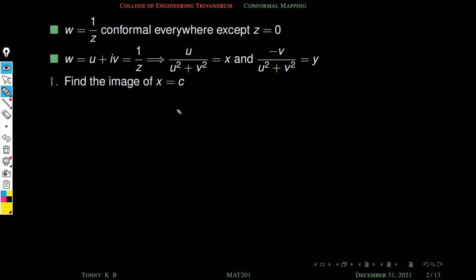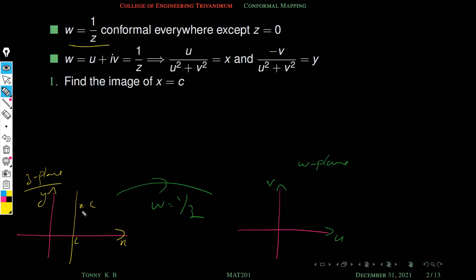Next we discuss the images of standard curves under the transformation w = 1/z. First, we find the image of x = c. The line x = c is a straight line parallel to the y-axis. We need to find what this maps to in the w-plane.